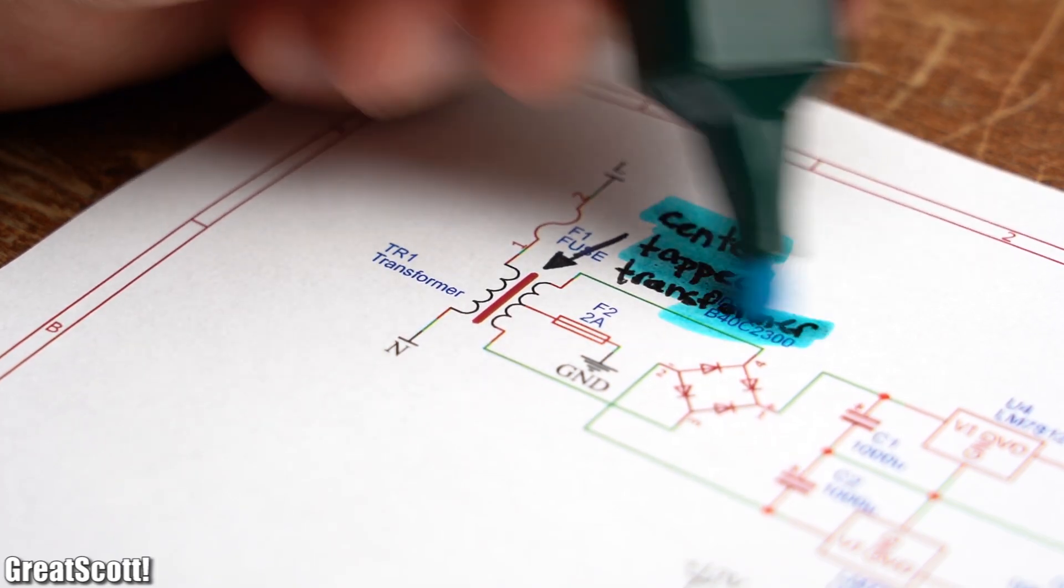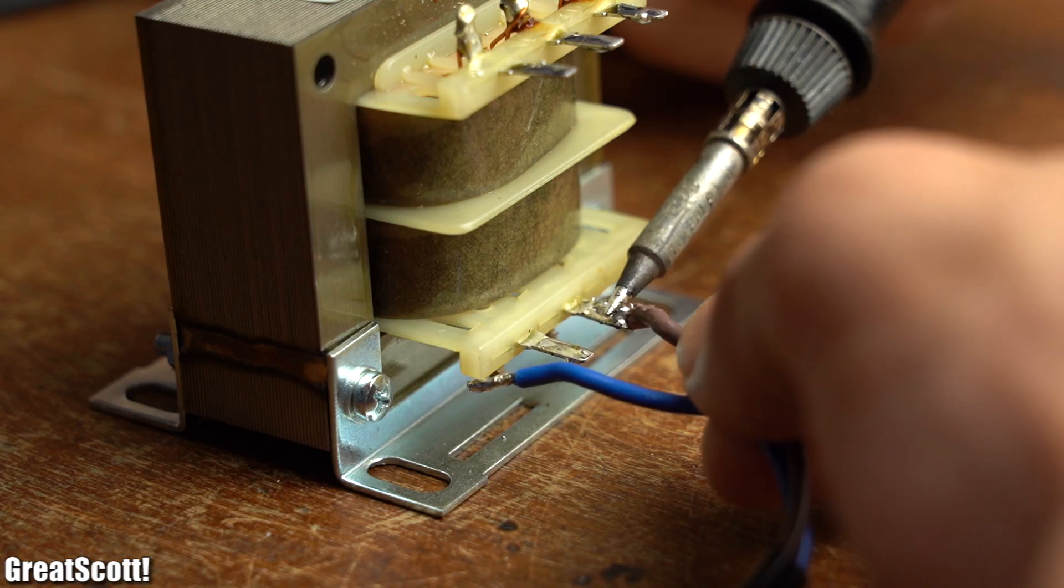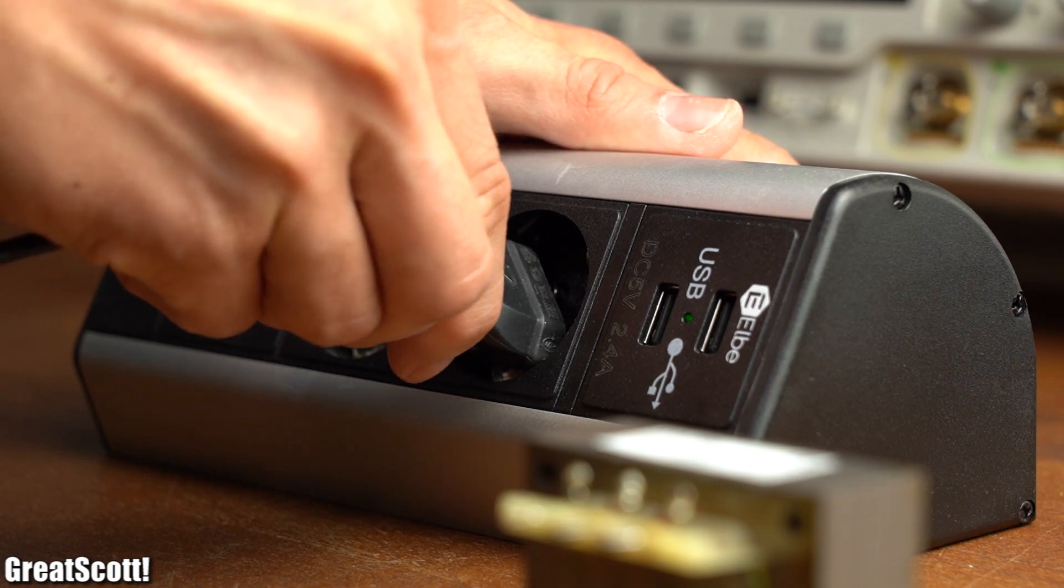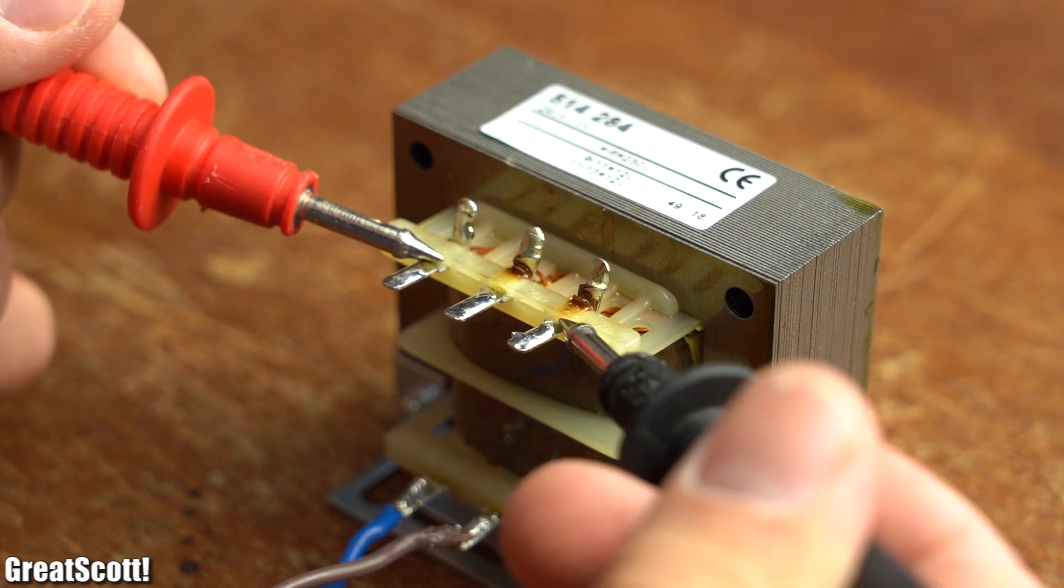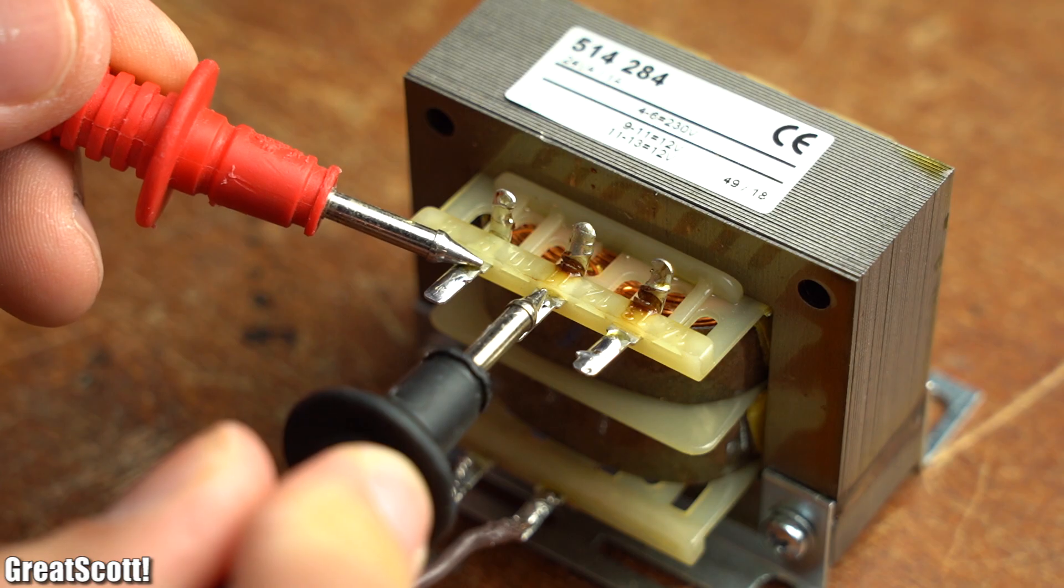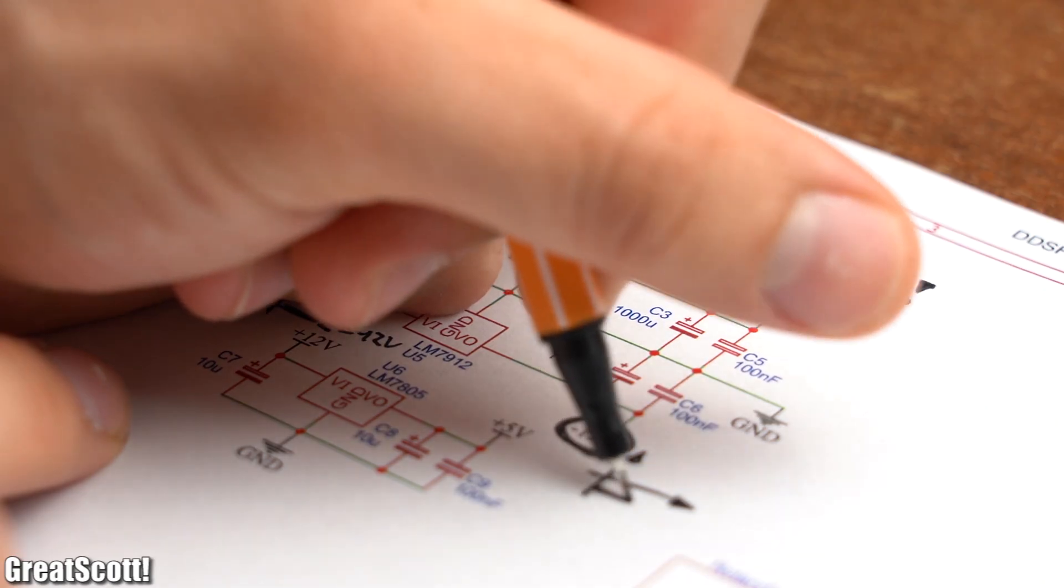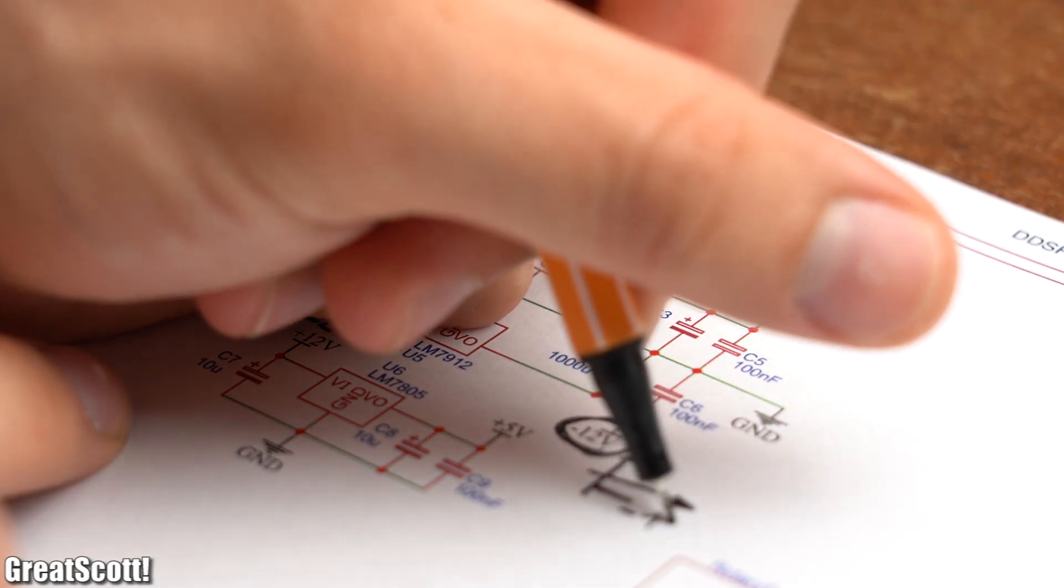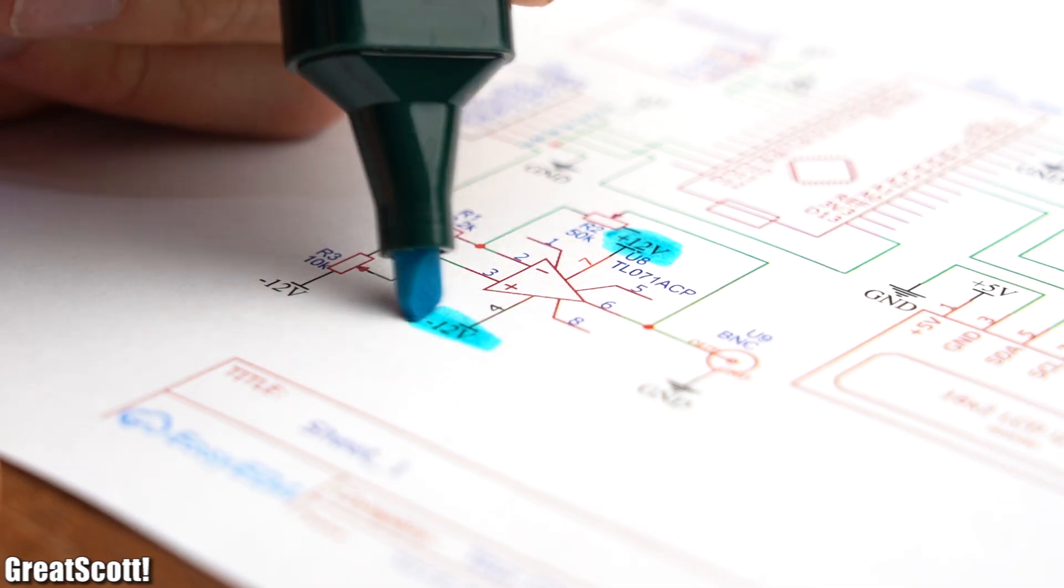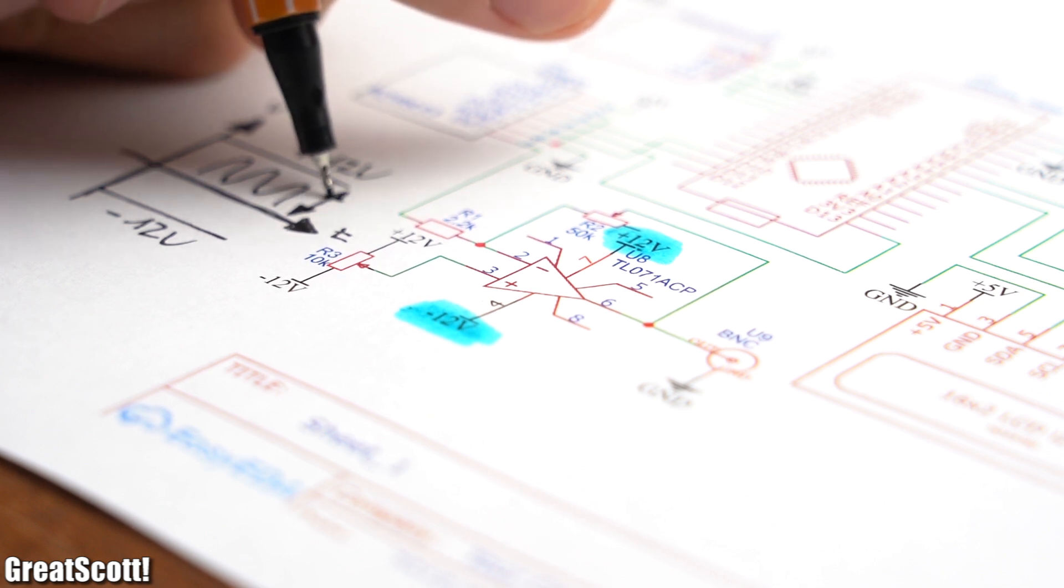Anyway, for the power supply we need a center tapped transformer like this one. After connecting it to mains voltage, which you should not do if you never worked with electronics before since that can be lethal, we can see that between its outer pins we got an AC voltage of 30 volts RMS, and between the outer pins and the middle pin around 15 volts RMS. This is mandatory to create a plus and minus 12 volt rail at the end of this power electronics circuits, whose only job is to power the op-amp, which allows us to move the waveform around between the two voltage rails.